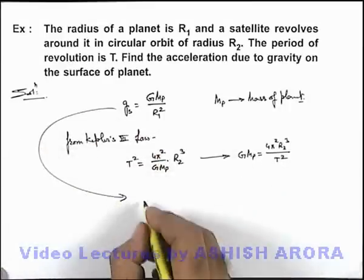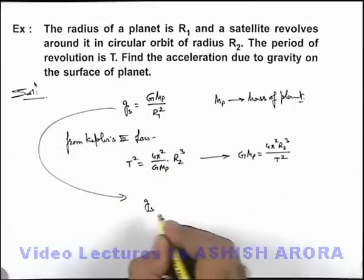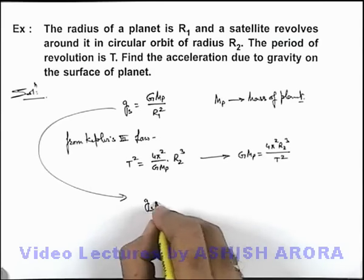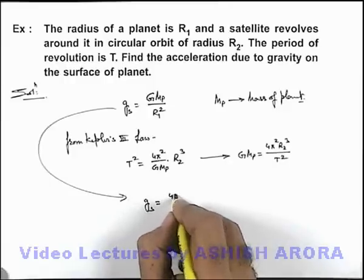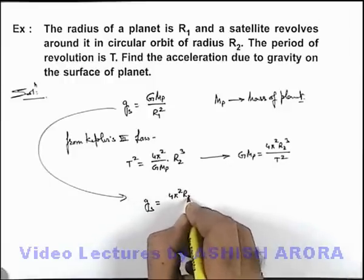Now from this expression we can write down that acceleration due to gravity on the surface of planet is GM_p, we can substitute from here. It is 4π² R₂ cube.